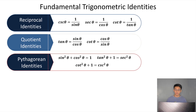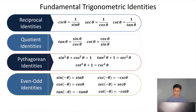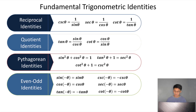Finally, for the last fundamental trigonometric identity, we have the even-odd identities: sine of negative theta equals negative sine theta; cosine of negative theta equals cosine theta; tangent of negative theta equals negative tangent theta; cosecant of negative theta equals negative cosecant theta; secant of negative theta equals secant theta; and cotangent of negative theta equals negative cotangent theta. These identities should not just be memorized — we should know them as well as we know our names, because they are that important in trigonometry.